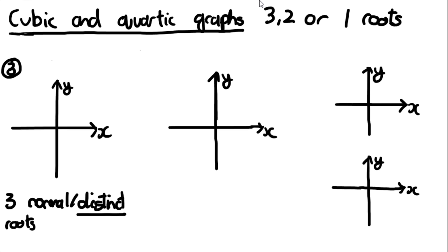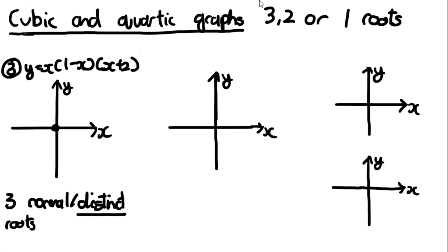Let's do another example with 3 roots - a negative graph this time. So let's do y = x(1 - x)(x + 2). The roots are going to be 0, 1 (because the bracket 1 - x gives the root 1), and minus 2.